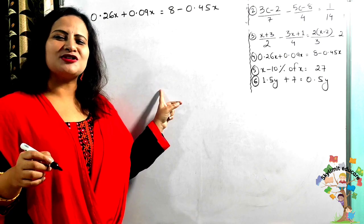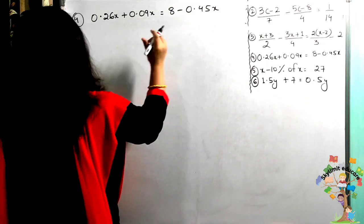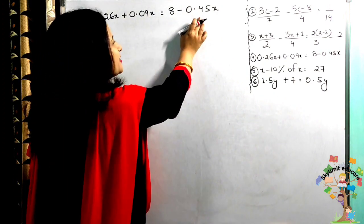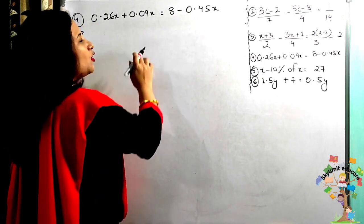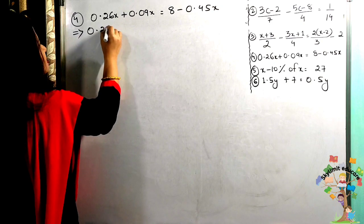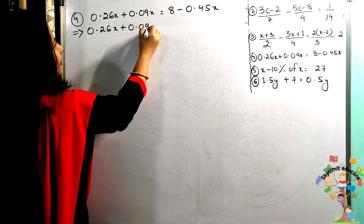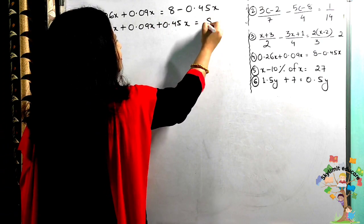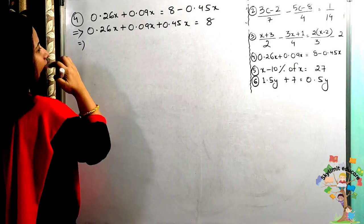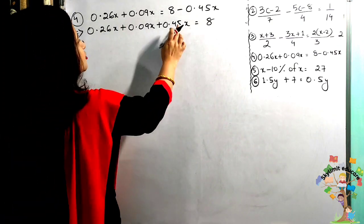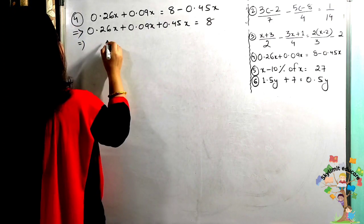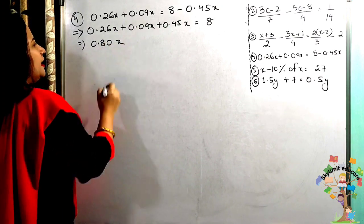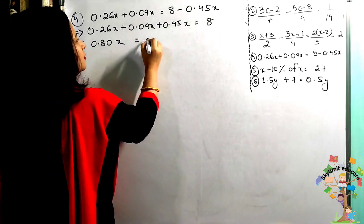Now the next question has decimals, so proceed carefully. We have 0.26x + 0.09x and −0.45x on the right hand side. Bringing all x to the left: 0.26x + 0.09x + 0.45x = 8. Adding the decimals: 0.26 + 0.09 + 0.45 = 0.80, so 0.80x = 8.